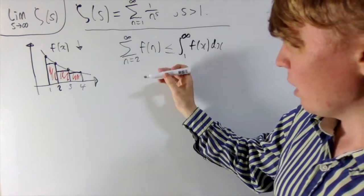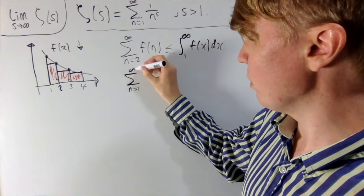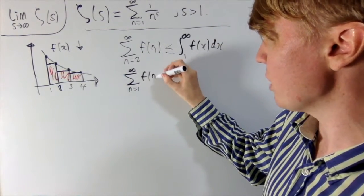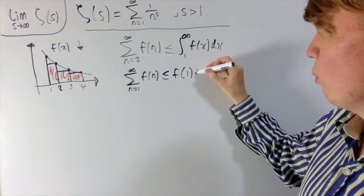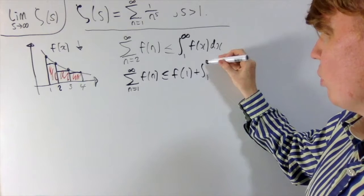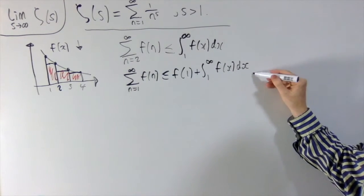And this is particularly relevant here, because all you need to do now to turn this into a sum from n equals 1 to infinity is just add f of 1 to both sides of this inequality. So you get that this is less than or equal to f of 1 plus the integral from 1 to infinity, f of x dx. So this is your upper bound from the integral test.